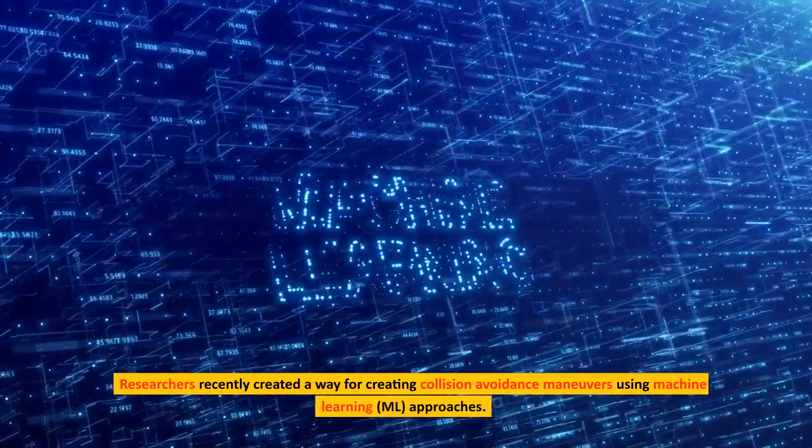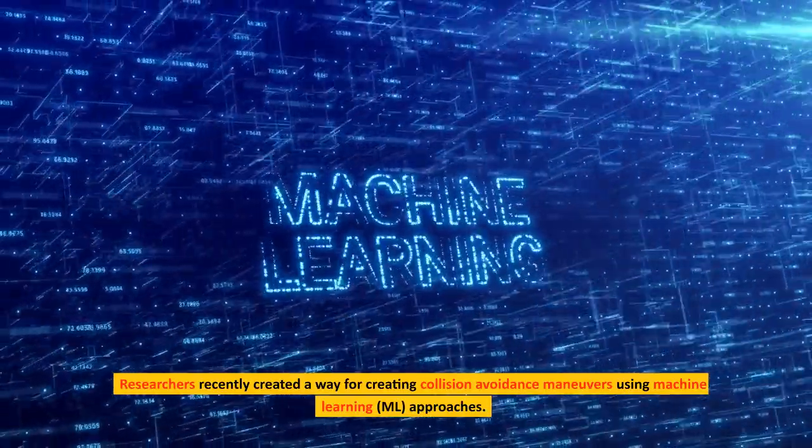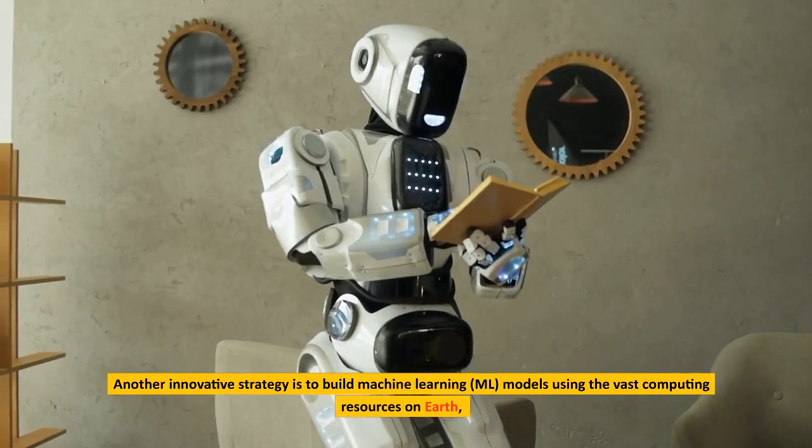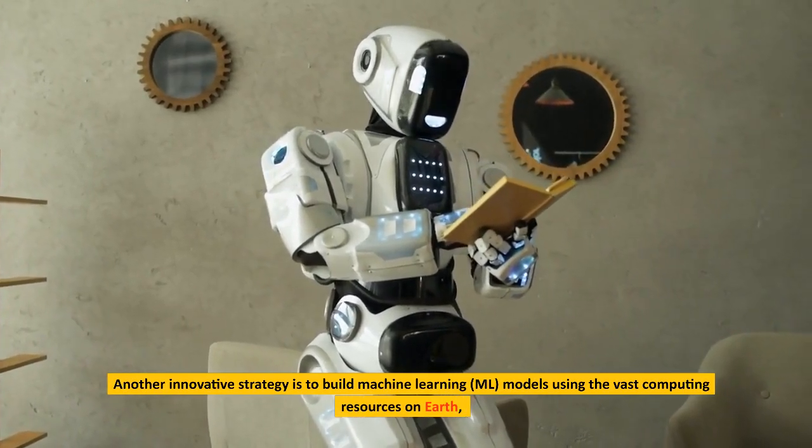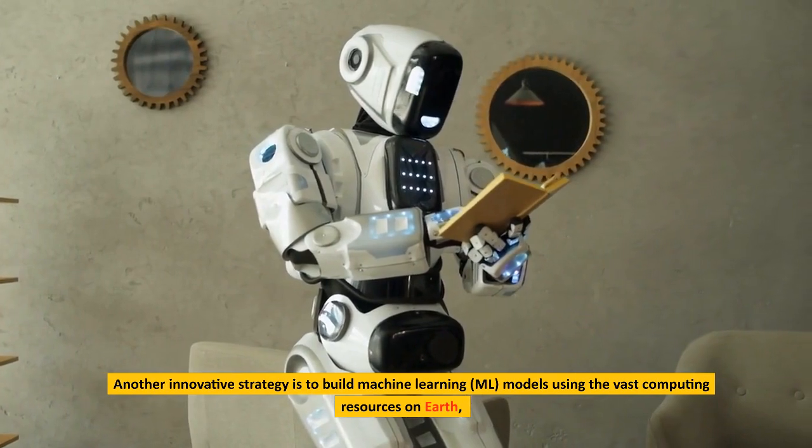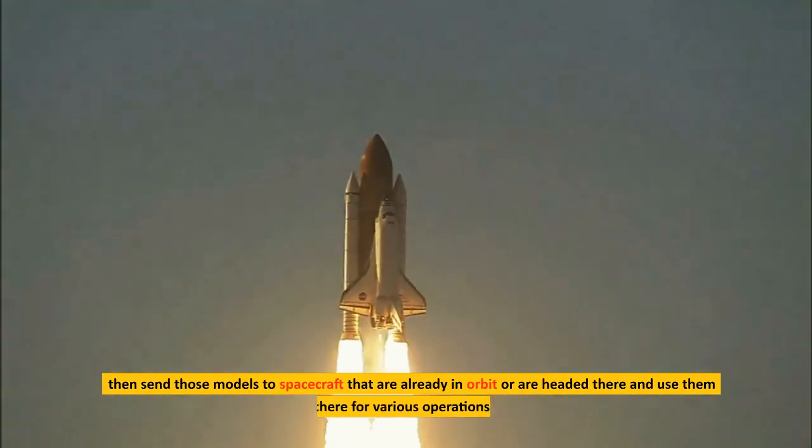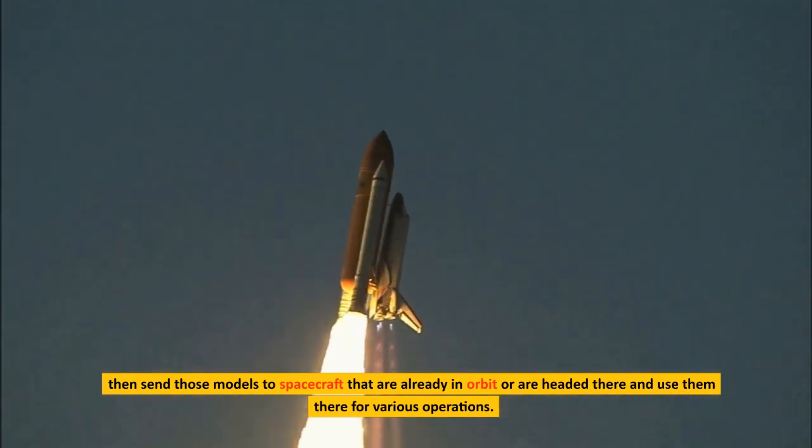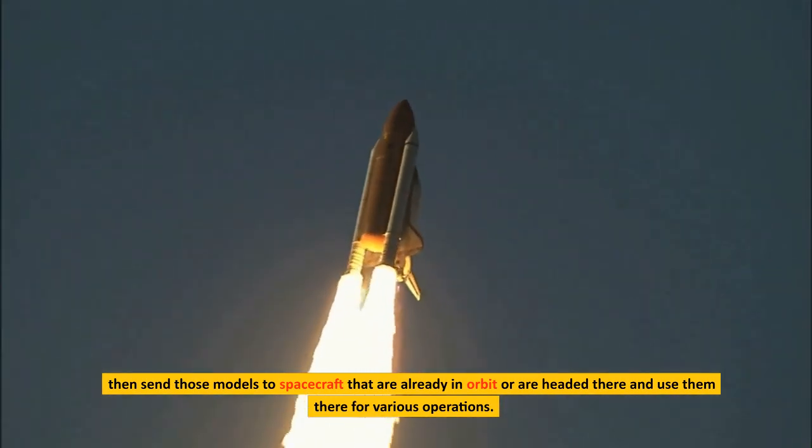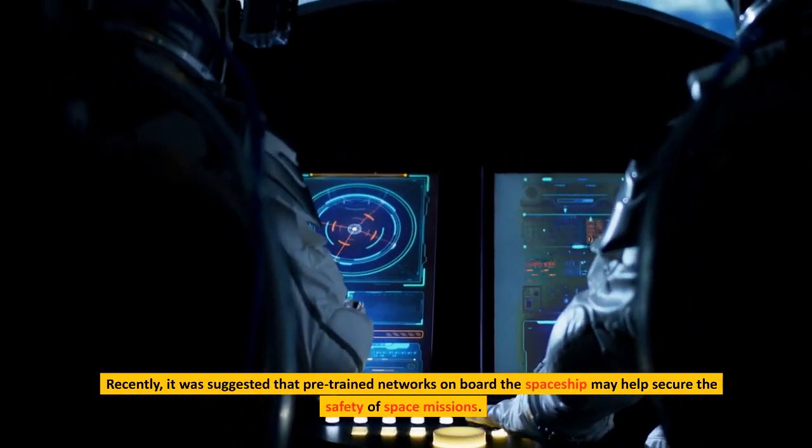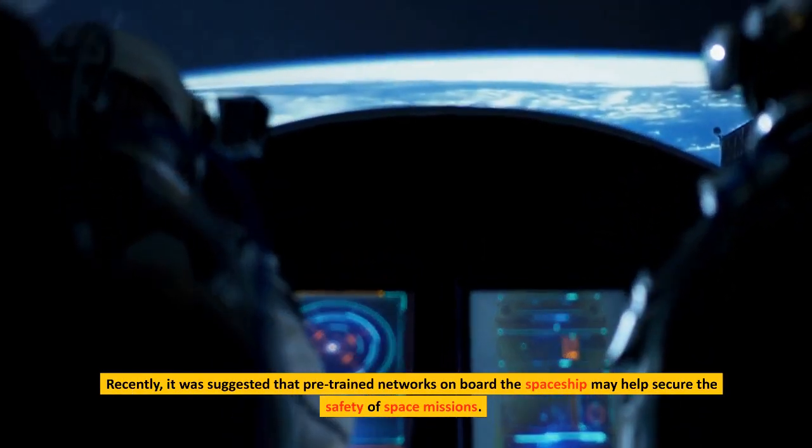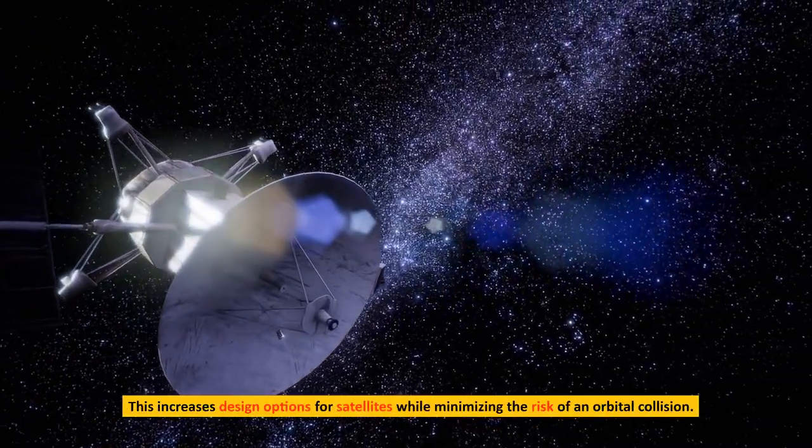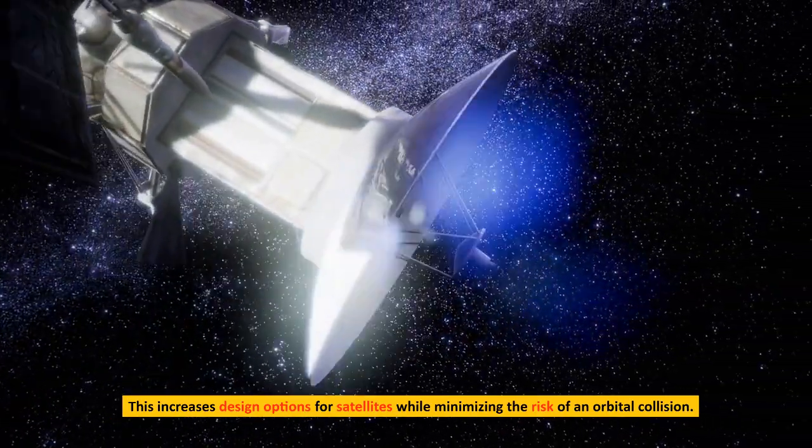Researchers recently created a way for creating collision avoidance maneuvers using machine learning approaches. Another innovative strategy is to build machine learning models using the vast computing resources on Earth, then send those models to spacecraft that are already in orbit or are headed there and use them there for various operations. Recently, it was suggested that pre-trained networks on board the spaceship may help secure the safety of space missions. This increases design options for satellites while minimizing the risk of an orbital collision.